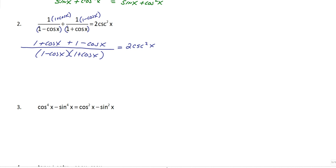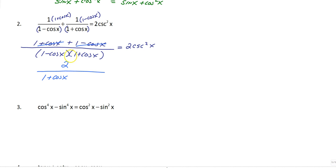So what are we going to do here? We're going to simplify the top and bottom in one step. We have one plus one, which is two, and then cosine x and negative cosine x cancel each other out. So that's two over, and we're going to foil the denominator: one times one is one, one times cosine x is cosine x, negative cosine x times one is negative cosine x, and negative cosine x times positive cosine x is negative cosine squared x. And that's still equal to two cosecant squared x.